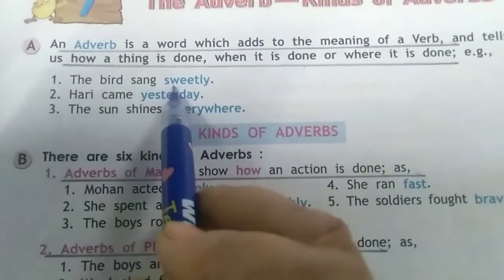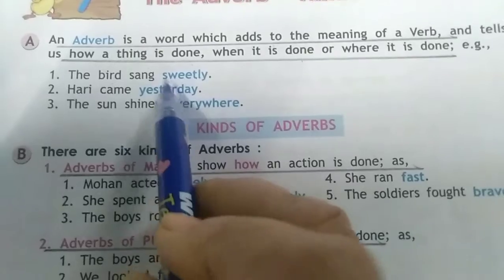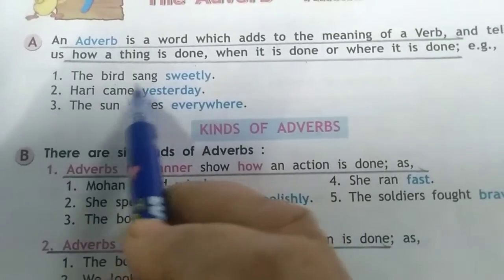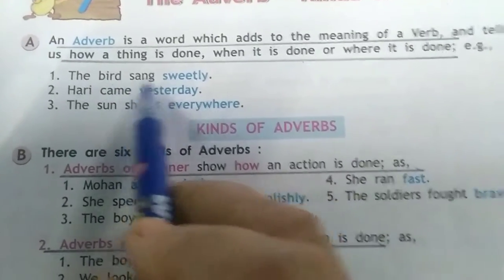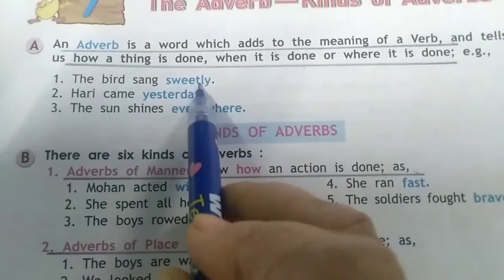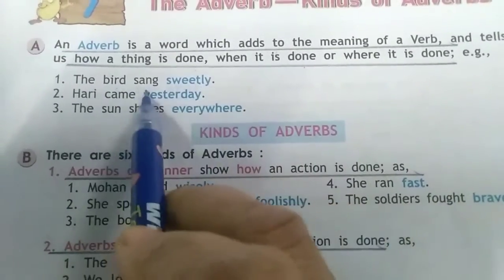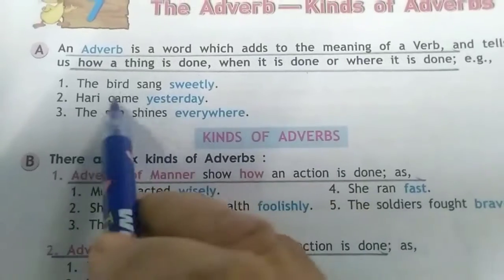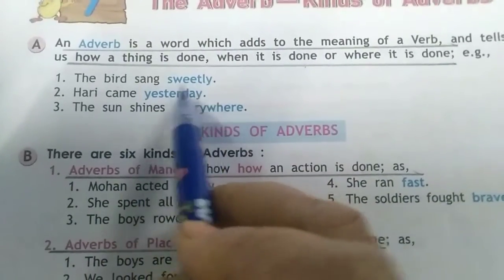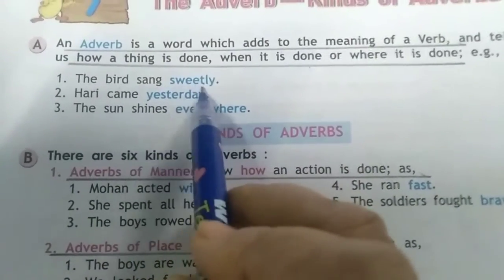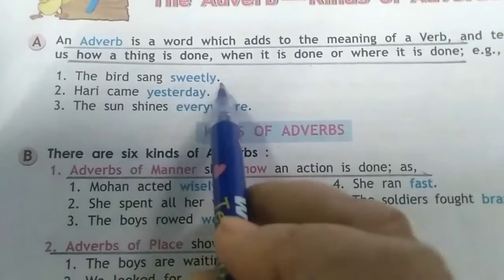For example: 'The bird sang sweetly.' Here, 'sang' is the verb and the adverb is giving meaning to the verb. The bird sang — how did it sing? Sweetly. So, 'sweetly' is the adverb.